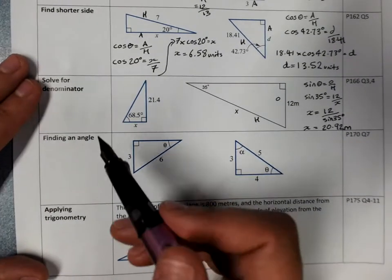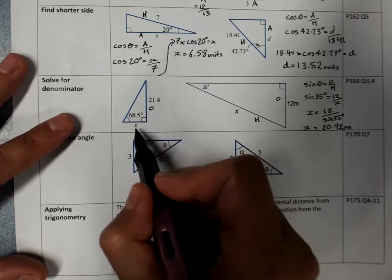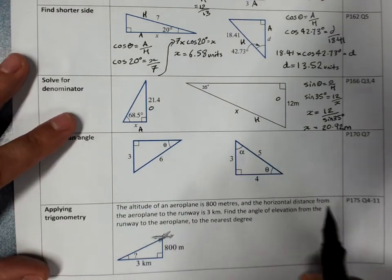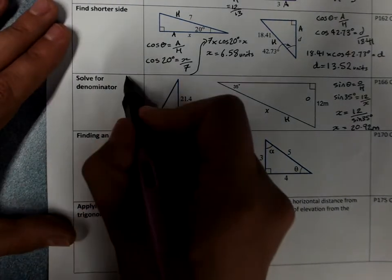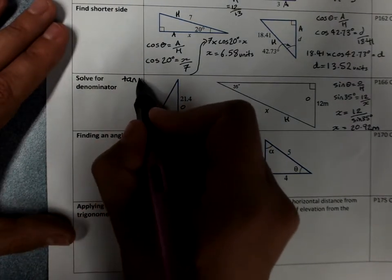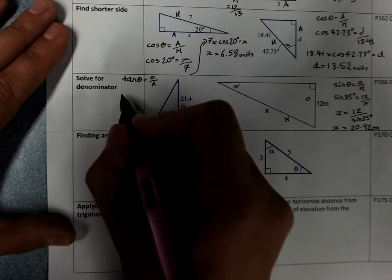Let's work this one out. Label our sides, opposite and adjacent. We have tan. Where are we going to squeeze this one in? Maybe here. We write our ratio.